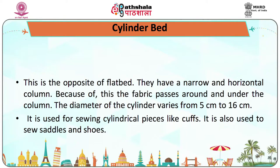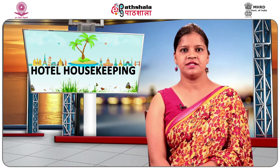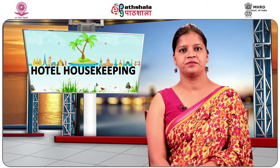Cylindrical bed: this is the opposite of flat bed. It has a narrow horizontal column, and the fabric passes around and under the column. The diameter of the cylinder varies from 5 cm to 16 cm. It is used for sewing cylindrical pieces like cuffs, sandals and shoes.